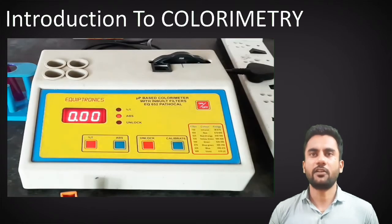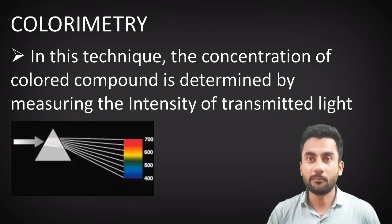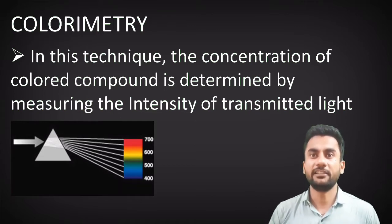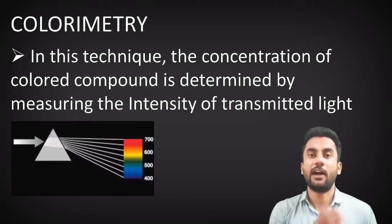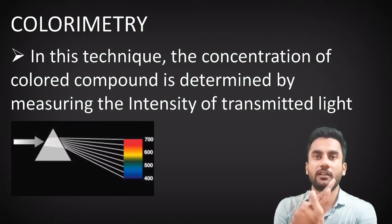Let us see introduction of colorimeter. First of all, what is colorimetry? Colorimetry is the technique in which the concentration of the colored compound is determined by measuring the intensity of transmitted light. From this figure, we can say that when white light is allowed to pass to one side of the prism, then at another side of the prism we can obtain the visible spectrum.